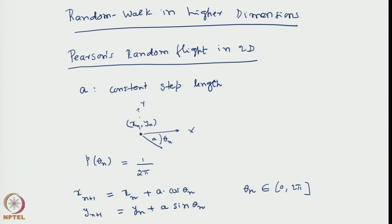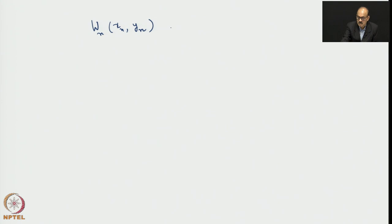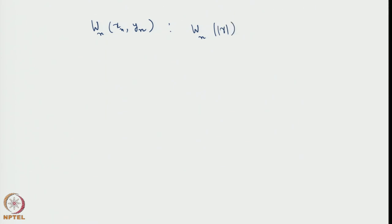Hence, the x-coordinate at step n+1 is x_n + a·cos(θ_n), and similarly the y-value at step n+1 is y_n + a·sin(θ_n). Here, θ_n is measured from the x-axis and is a random variable belonging to 0 to 2π, which can take any value. The values of x_n and y_n have the same quality as the random walker's positions in one-dimensional random walk.